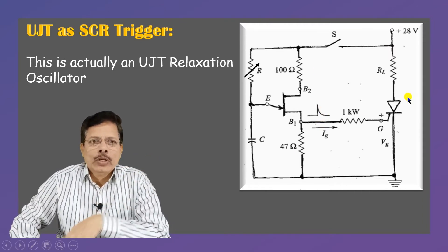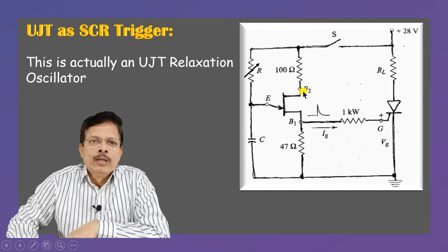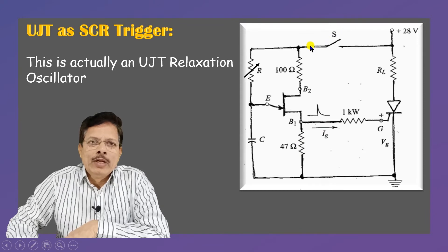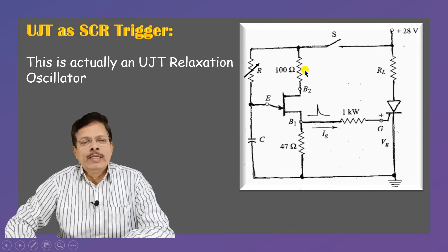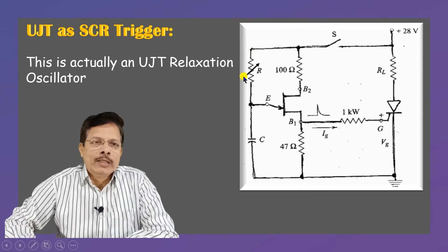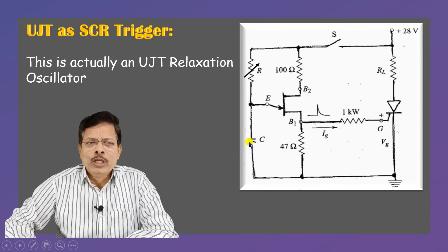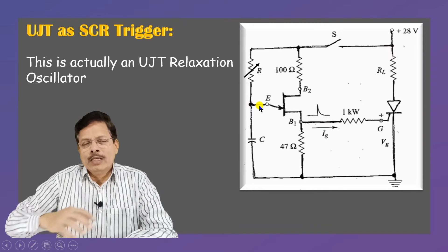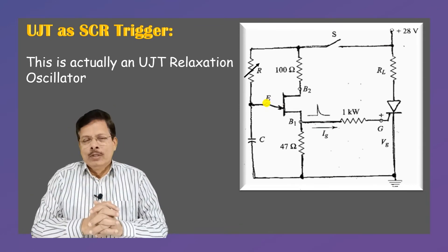Every UJT has a VP — the peak voltage. For example, here we have the B2 terminal and B1 terminal. When a voltage VBB is applied — say 8 volts between base two and base one — this capacitor begins to charge through the resistor. The voltage at the emitter point begins to increase exponentially, and when this emitter voltage reaches a specific value, we call it VP — the peak voltage.